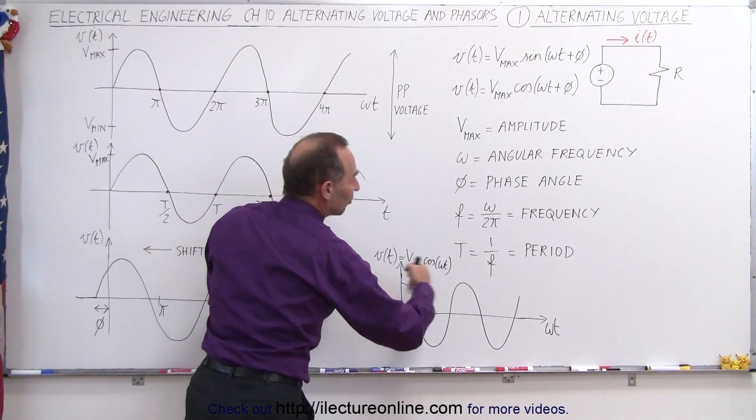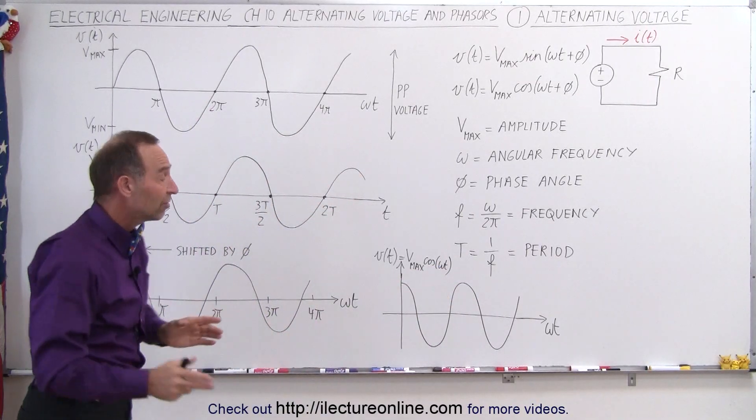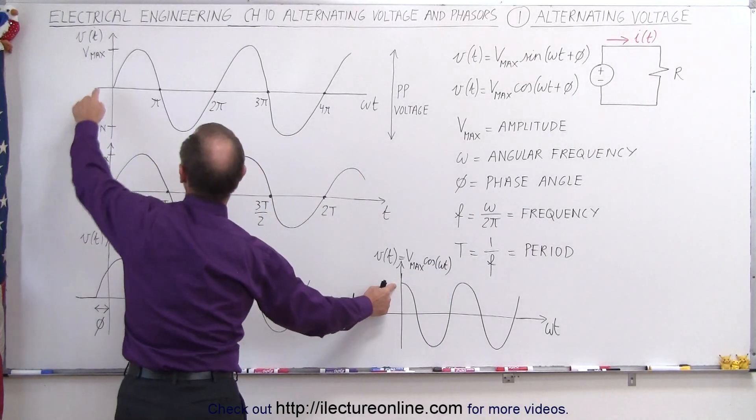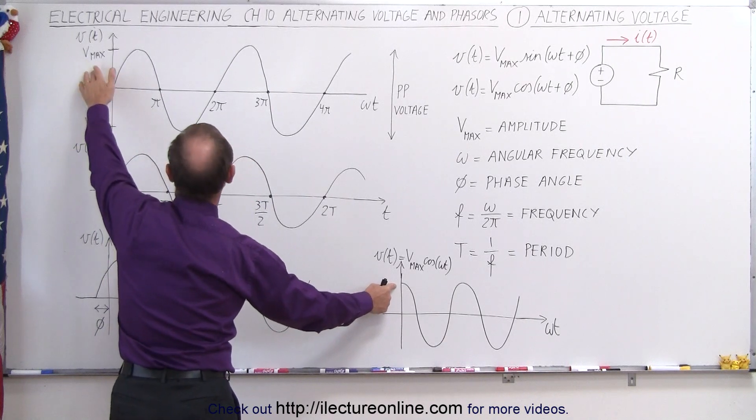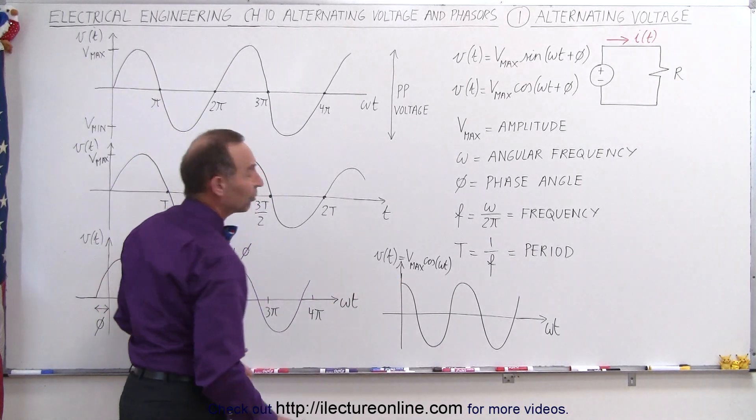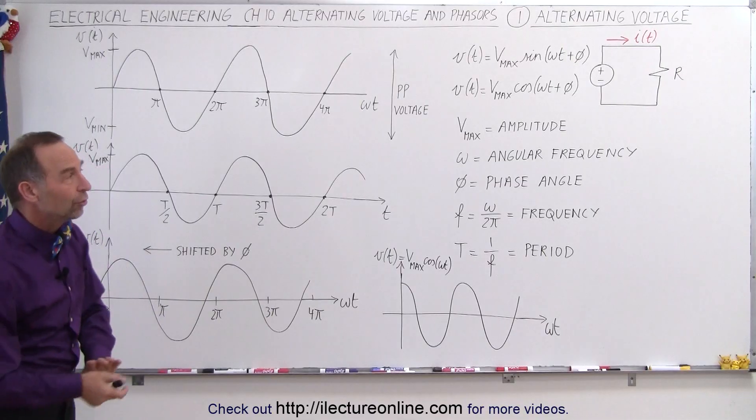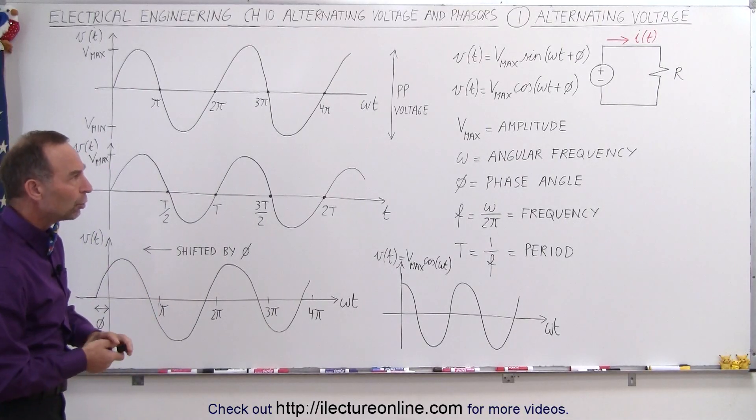Notice we have the same amplitude, the same period, the same everything, except we just started a different point on the graph when time is equal to zero. So here this would be a sine function, a cosine function over there, and it makes no difference whatsoever which one you use.